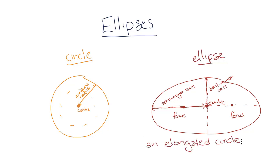You can quantify how elongated an ellipse is with a number known as the eccentricity, which is between 0 and 1. A higher eccentricity means the ellipse is more elongated.